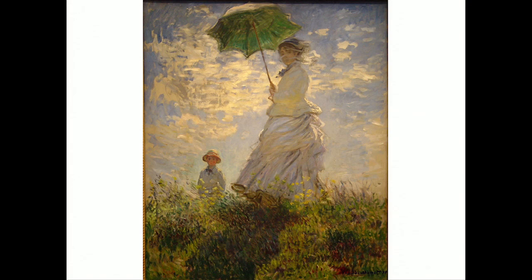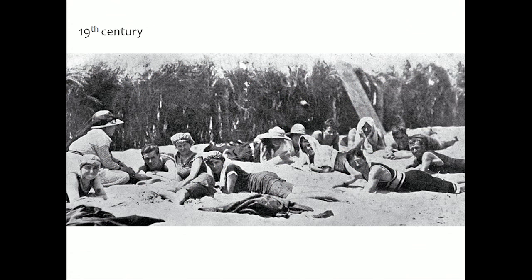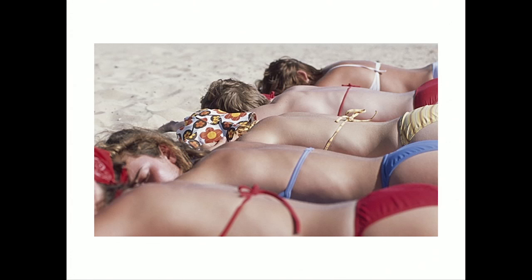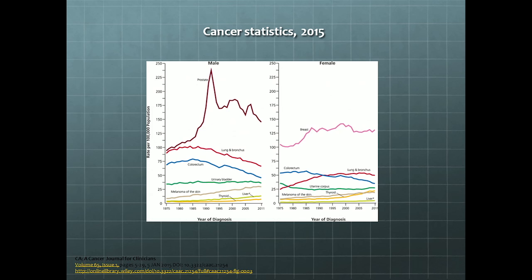The look of having a sun tan became acceptable. Looking at Claude Monet's paintings, you can see the sun-exposure behavior of the era: hats, long dresses, umbrellas. By the early 1900s, sun-exposure behavior changed — people started going to the beach and losing the hats, spending more and more time at the beach.